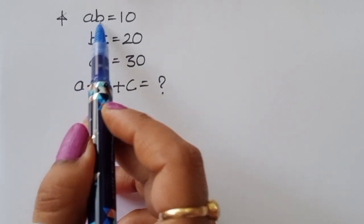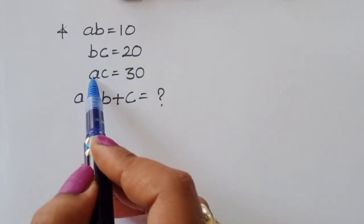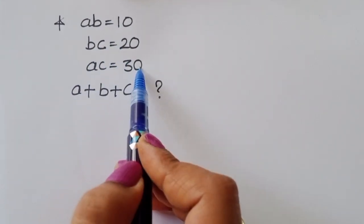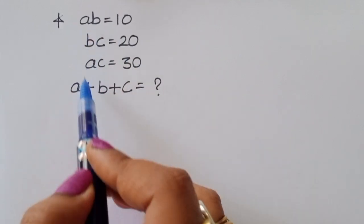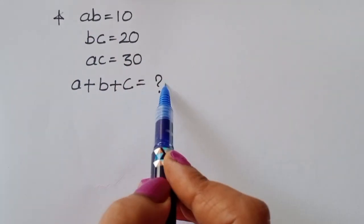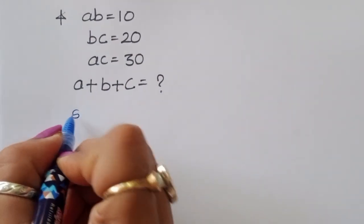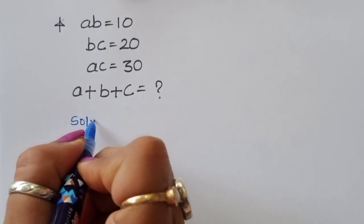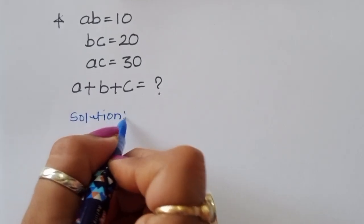The question gives us AB is equal to 10, BC is equal to 20, AC is equal to 30, and we have to find out the value of A plus B plus C. Let's see how we can find out the value of this solution.